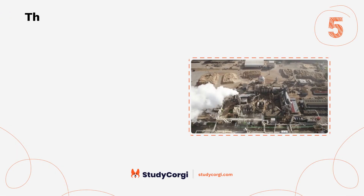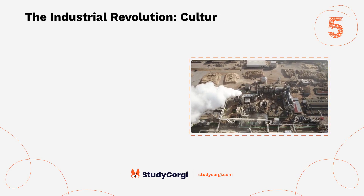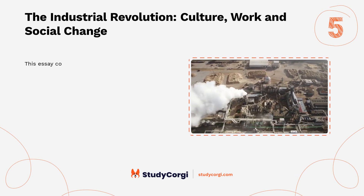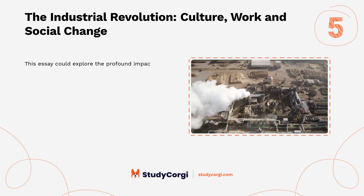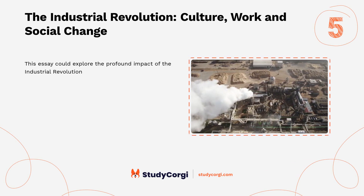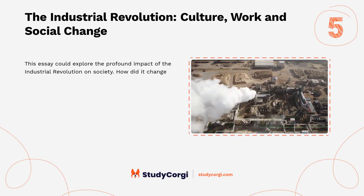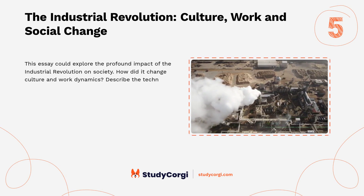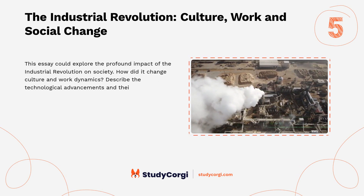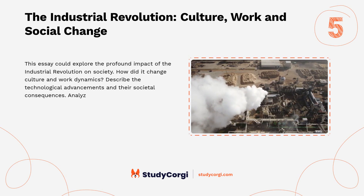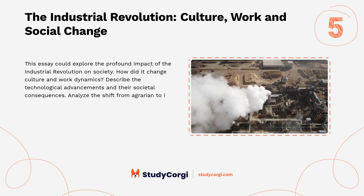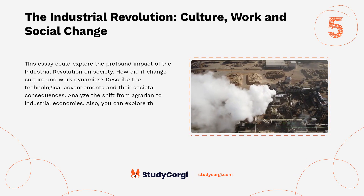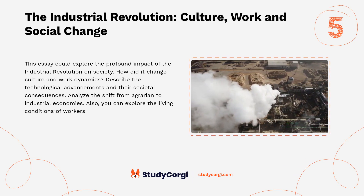The Industrial Revolution, Culture, Work and Social Change: This essay could explore the profound impact of the Industrial Revolution on society. How did it change culture and work dynamics? Describe the technological advancements and their societal consequences. Analyze the shift from agrarian to industrial economies. Also, you can explore the living conditions of workers during this period.